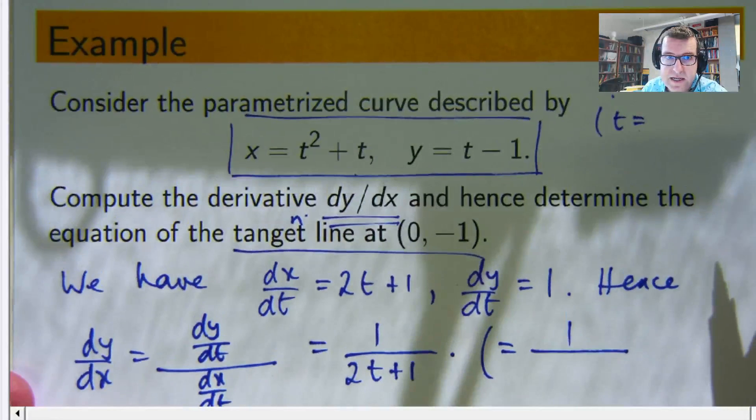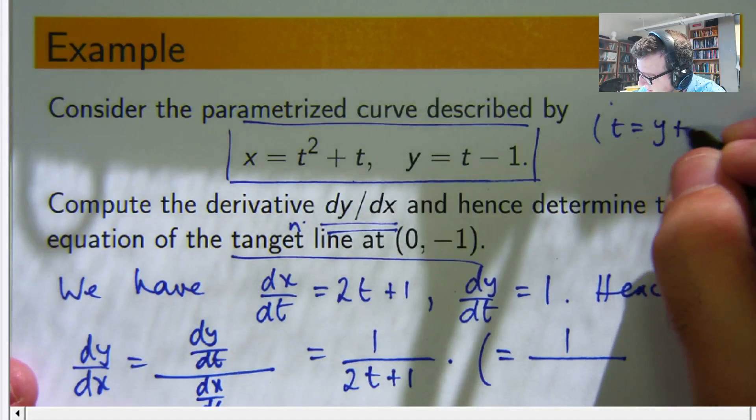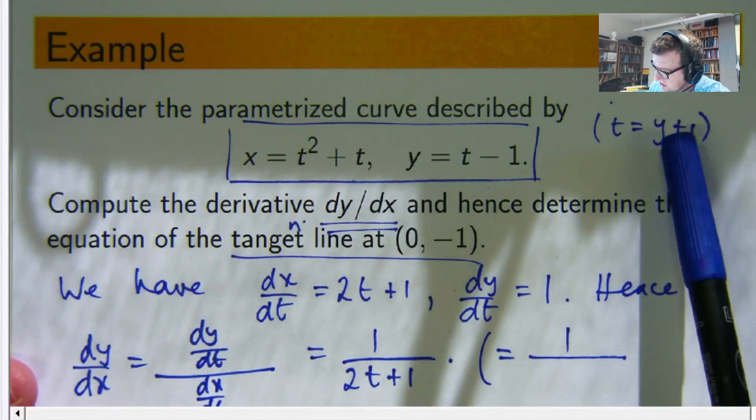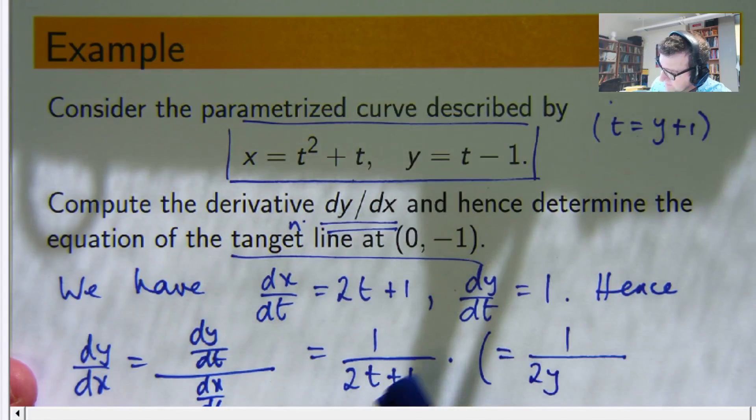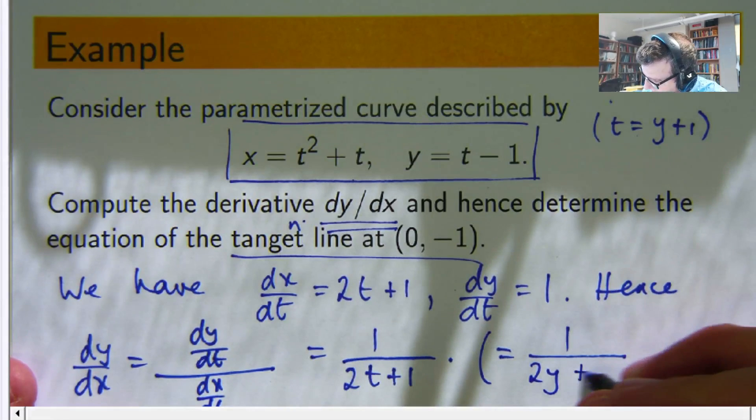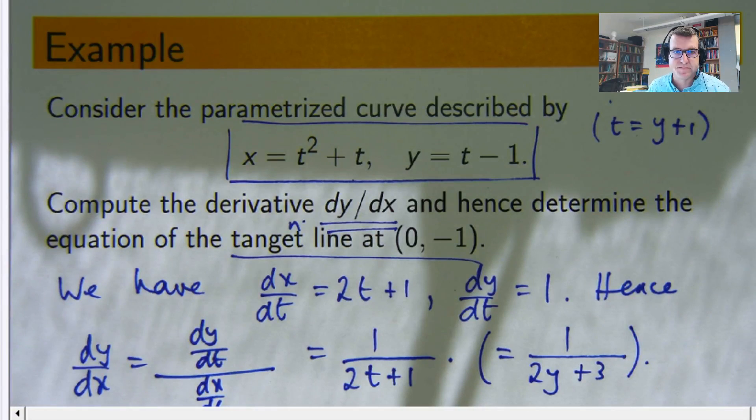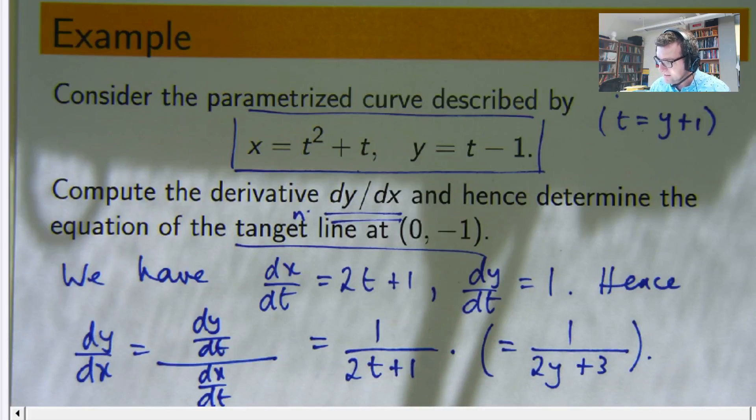y plus 1. So if I wanted to get this in terms of x and y, I would just put that in there. I'll get 2y plus 2 plus 1, which is 3. Let me just check that. Yep! Great!